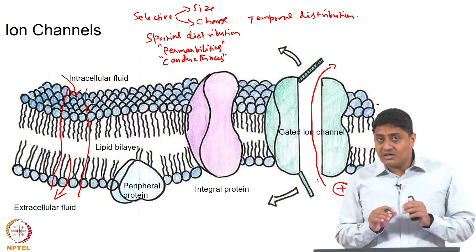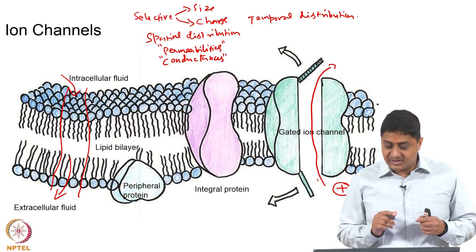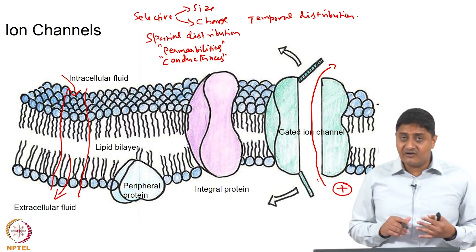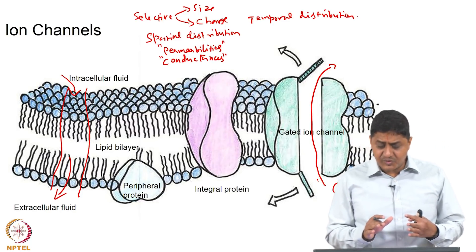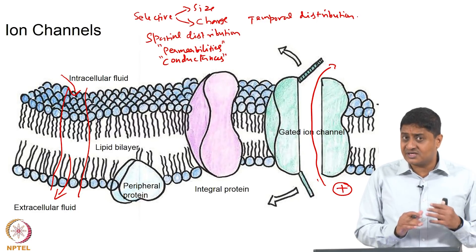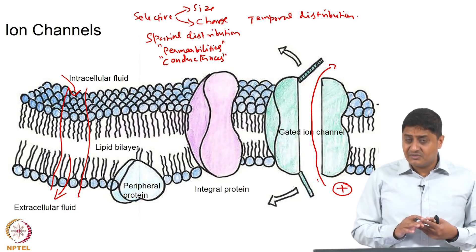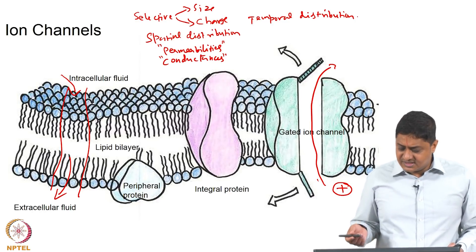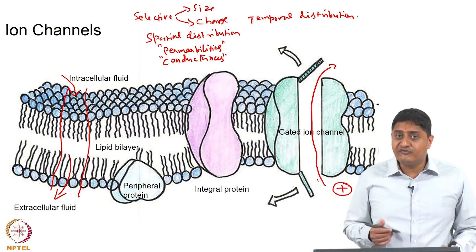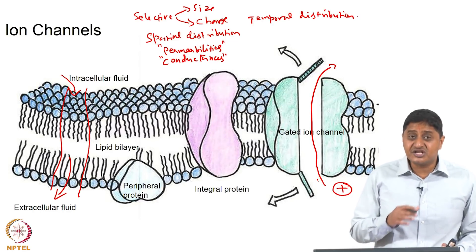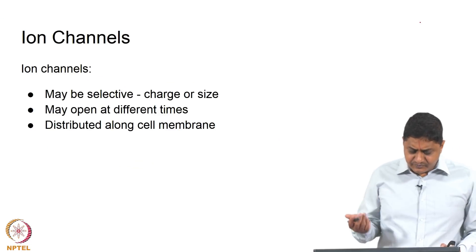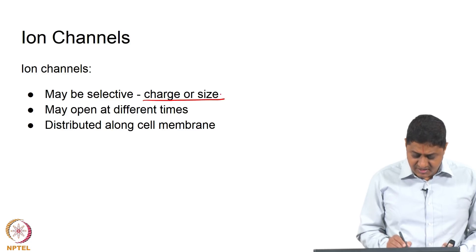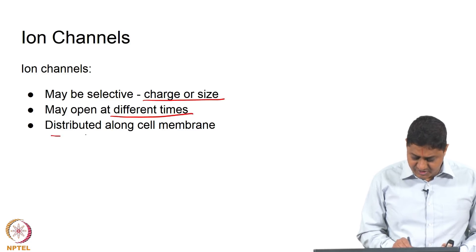There is both a spatial distribution and a temporal distribution that affects permeabilities. Not all channels allow all types of ions to pass through, so there is also selectivity in terms of which ion passes through which channel. What you have is a relatively complicated situation where different channels allow different types of ions and they are open at different times depending on different conditions. Ion channels may be selective based on charge or size; they may open at different times; they are distributed along the cell membrane.